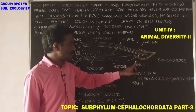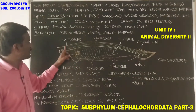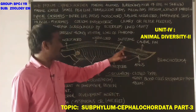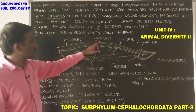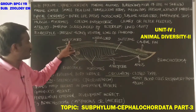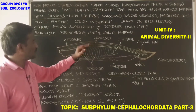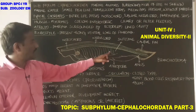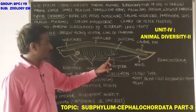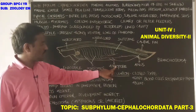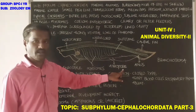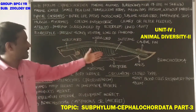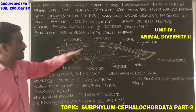In the Branchiostoma diagram: the caudal fin, anus, and notochord are visible. The nerve cord (dorsal tubular nerve cord) lies between the dorsal body wall and the notochord, above the food tube. The endostyle and myotomes are also shown. The atrial cavity opens to the outside by the atrial aperture, also called the atriopore.